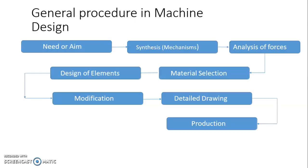The general procedure for machine design starts with identifying the need or aim — for what purpose are we designing. Next is synthesis or mechanism: as discussed, a mechanism is a number of elements that perform their function when combined, so synthesis is carried out to determine how the mechanism will perform. Then comes analysis of forces, using knowledge of mechanics and strength of materials.